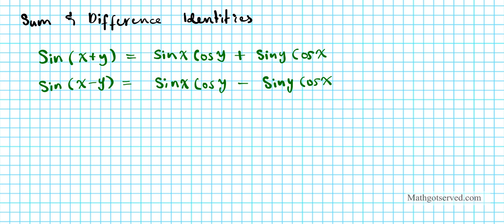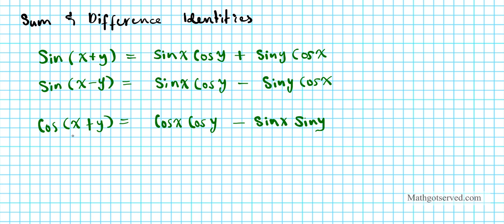Now for cosine, the reverse happens. If I have cosine of x plus y, it's going to become cosine x cosine y minus sine x sine y. You notice for the cosine sum identity, the trig functions stay the same but the signs become opposite. Whereas for sine, the trig functions alternated but the signs were the same.